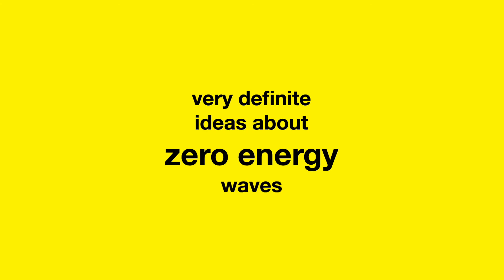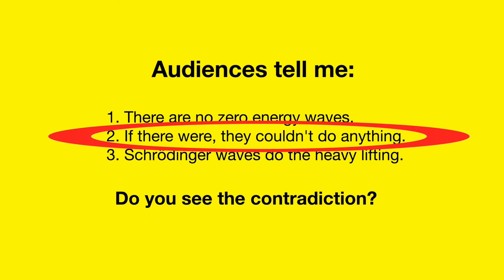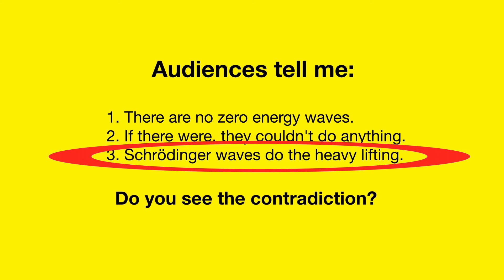People have very definite ideas about zero-energy waves. Basically, they say that number one, there are no such waves. Number two, if there were zero-energy waves, they could not do anything. And number three, Schrödinger waves do the heavy lifting in the quantum world. Do you see the contradictions?